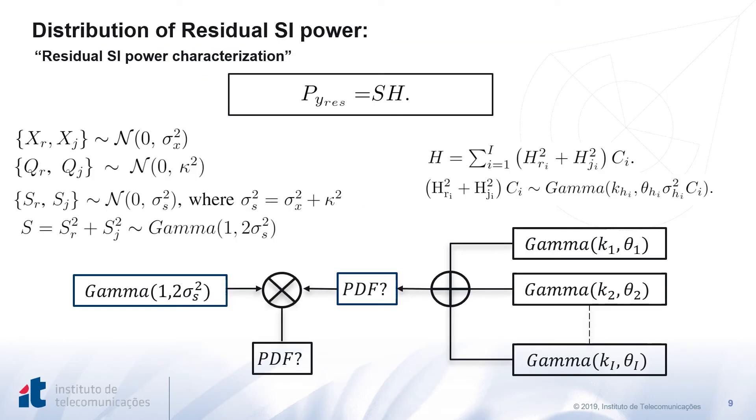For sake of characterizing the residual self-interference signal power, we found the distribution of the random variable S representing the self-interference signal power in addition to RF and hardware impairments power, and the random variable H representing the fading terms power in addition to estimation errors, given that S and H are independent random variables. Given that the self-interference and the distortion signals are circularly symmetric complex random signals, then S can be represented by a gamma distribution. On the other hand, assuming that each fading tap is Rician distributed, then each fading tap can be described by a gamma distribution as well. Therefore, the distribution of the residual self-interference signal power can be seen as a product between a gamma random variable given by S and the sum of non-identically distributed gamma random variables, which is obviously depicted by the following diagram.